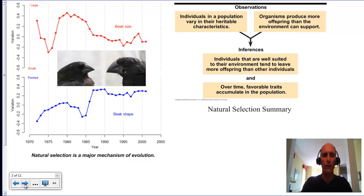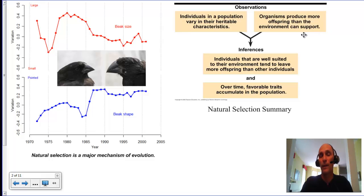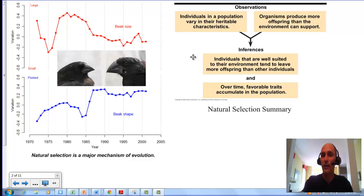It's a pretty controversial subject for some people in terms of its implications. However, the basic theory behind it, the basic ideas behind it, are very obvious kinds of things. Darwin's basic summary is pretty straightforward: organisms vary in their characteristics, and there are more organisms born than ever survive. Based on those observations, if population sizes remain steady, the organisms best suited for their environment are going to be more likely to have offspring that survive, and favorable traits will accumulate in the population.